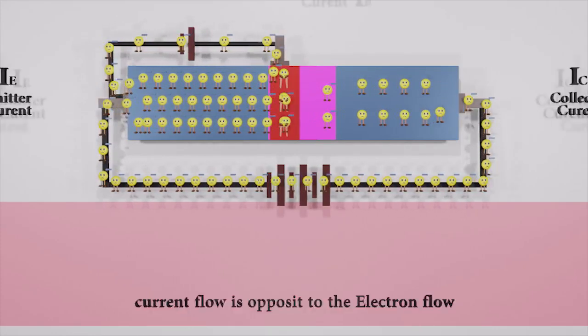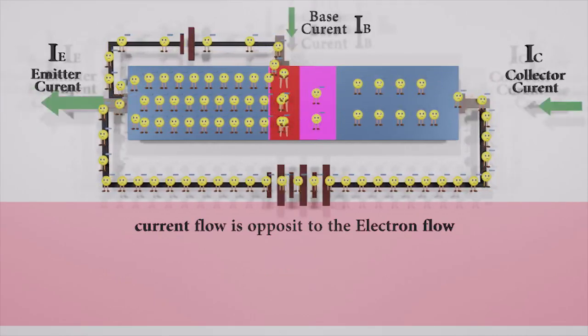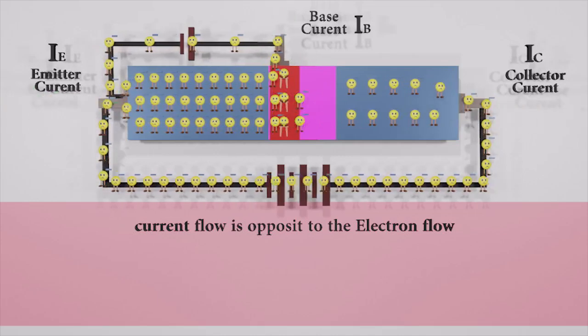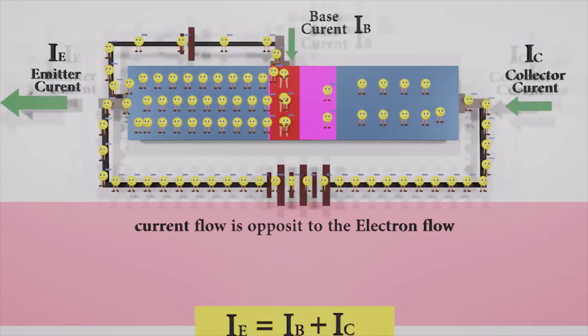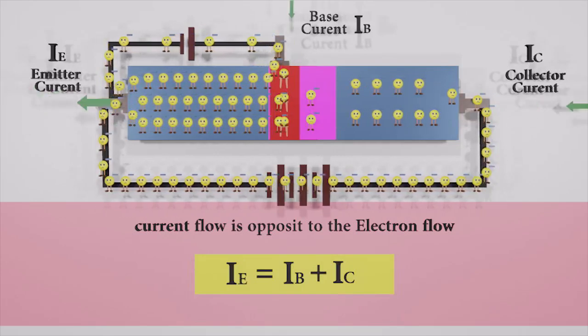The current through the emitter is called emitter current. The current through the collector is called collector current. And the tiny current flowing through the base terminal is called base current. Hence, here emitter current is the sum of the base current and collector current.